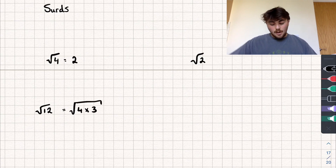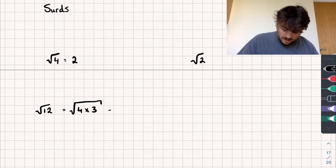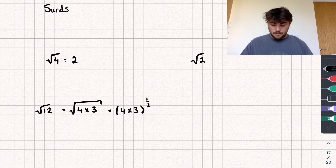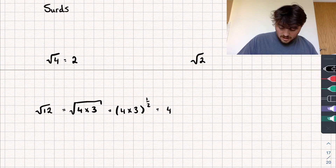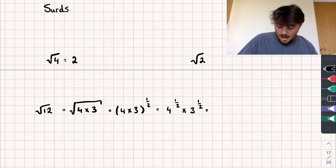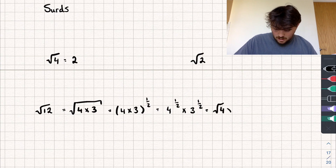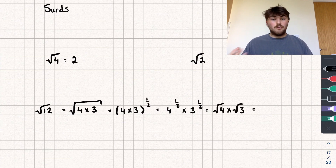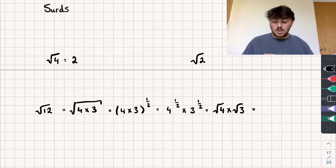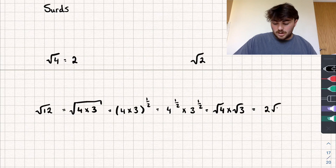Using our knowledge of indices, I know that anything to the power of a half is the same as square rooting it, so I could say this is the same as (4 times 3) all to the power of 1/2. From here, we could distribute that power across the 4 and the 3, so it's the same as 4 to the power of 1/2 multiplied by 3 to the power of 1/2. Since something to the power of 1/2 means we square root it, that gives us the square root of 4 times the square root of 3, which is 2 times √3, or 2√3.